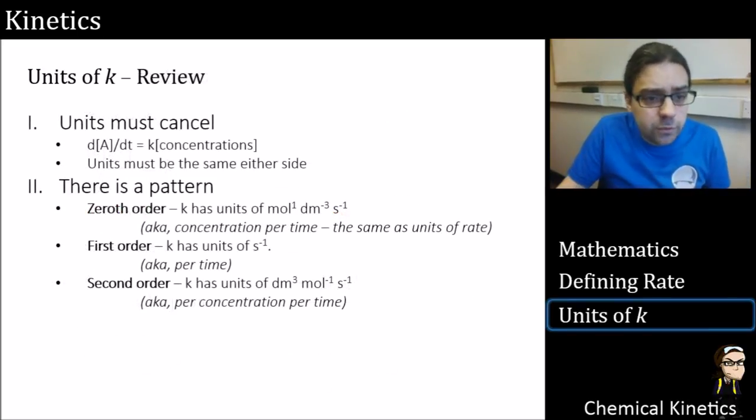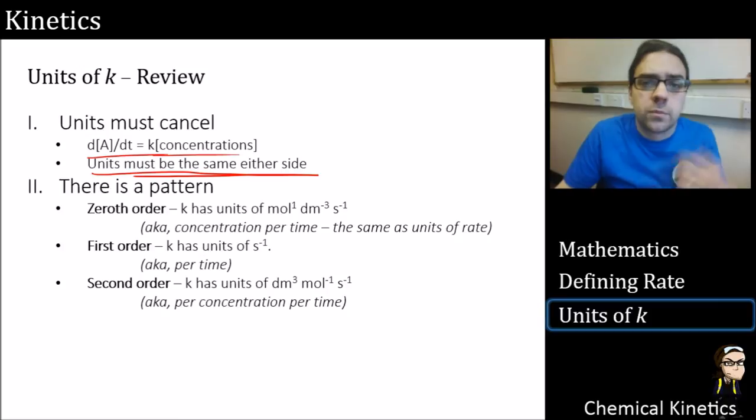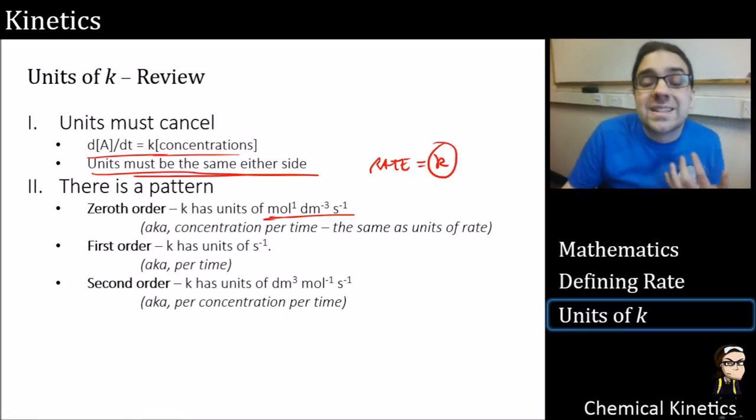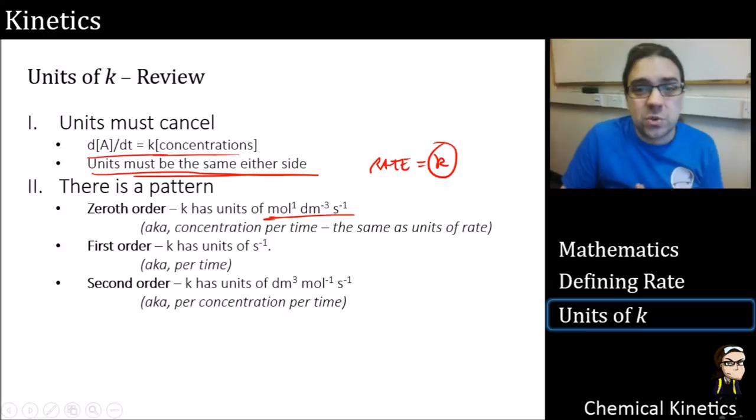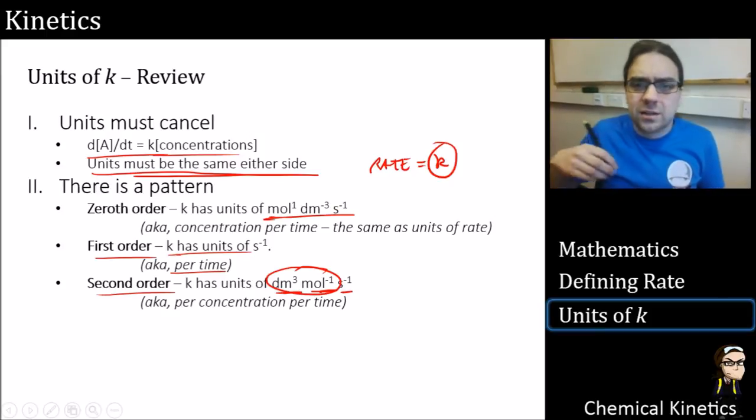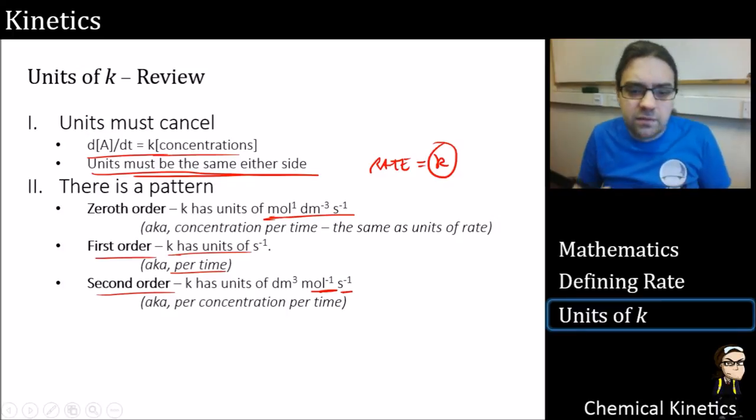We'll review the units for a moment. dA by dt is equal to k times concentrations, and the units must be the same on each side. Zeroth order, that is when our rate is just equal to k. It is a constant. That is units of moles per decimeter cube per second, or concentration per time, which is exactly the same as the units of rate. First order k has units of per second, aka per time, and second order has units of dm cubed per mole per second. That whole thing of liters per mole doesn't sound very intuitive, but it does have some physical significance when you get into it. It's kind of an inverse concentration per time.